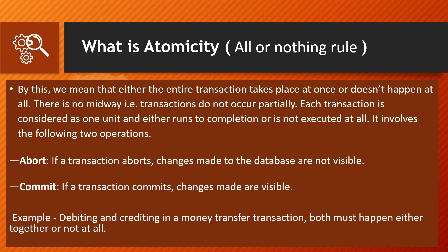Atomicity: this is the all-or-nothing rule. Either your transaction is complete or not — there is no partial transaction. In an atomic transaction, when we have two outcomes: either abort or commit.